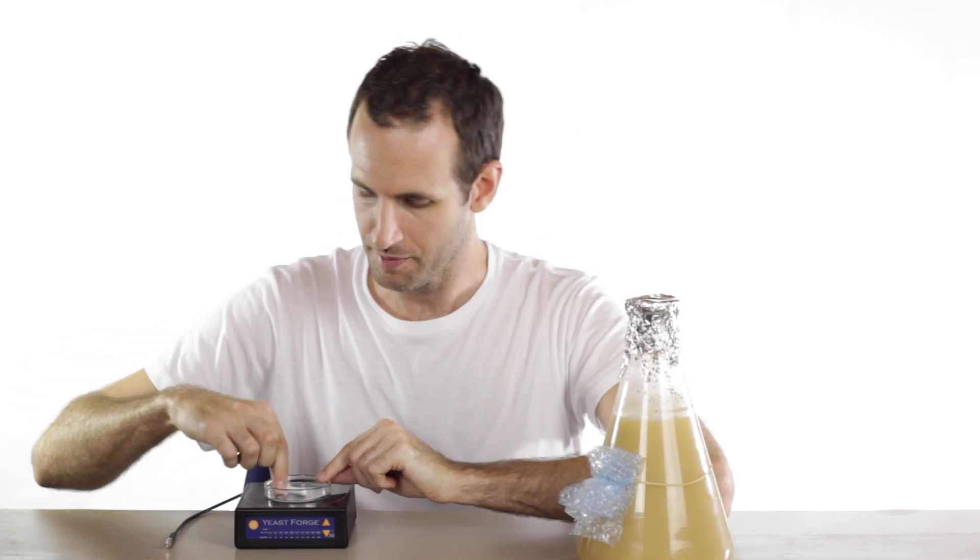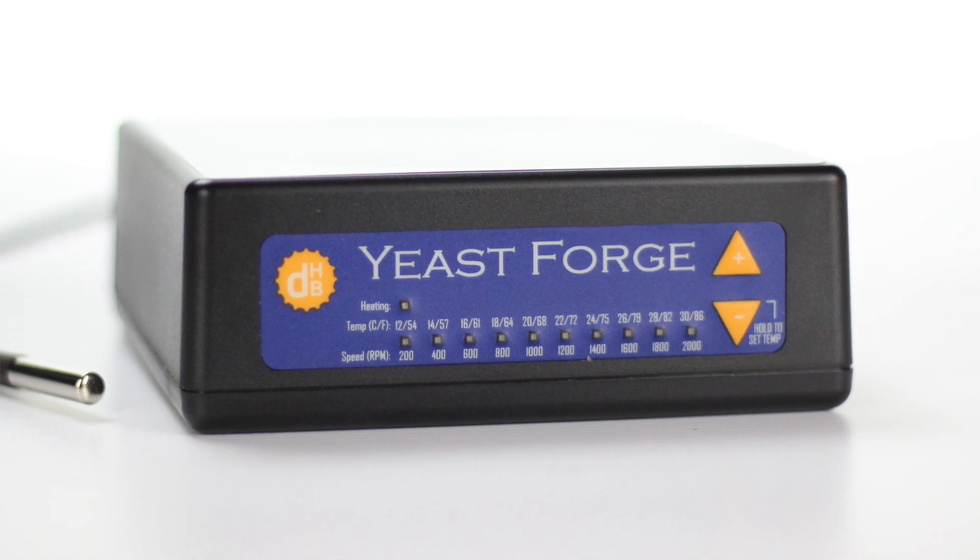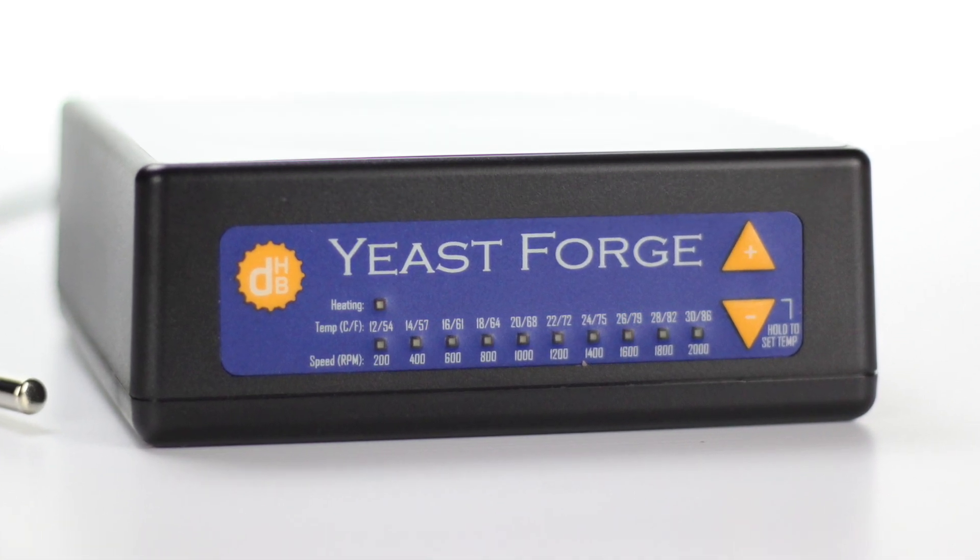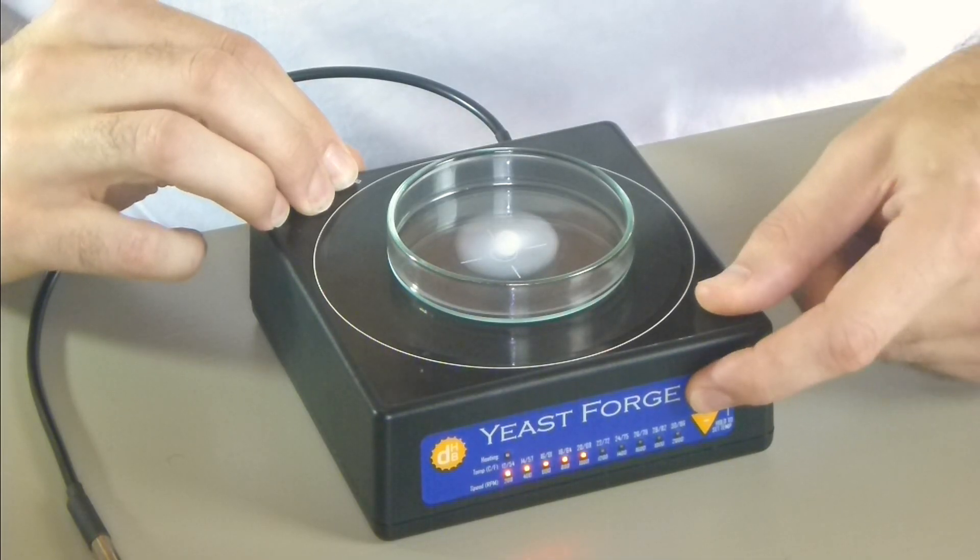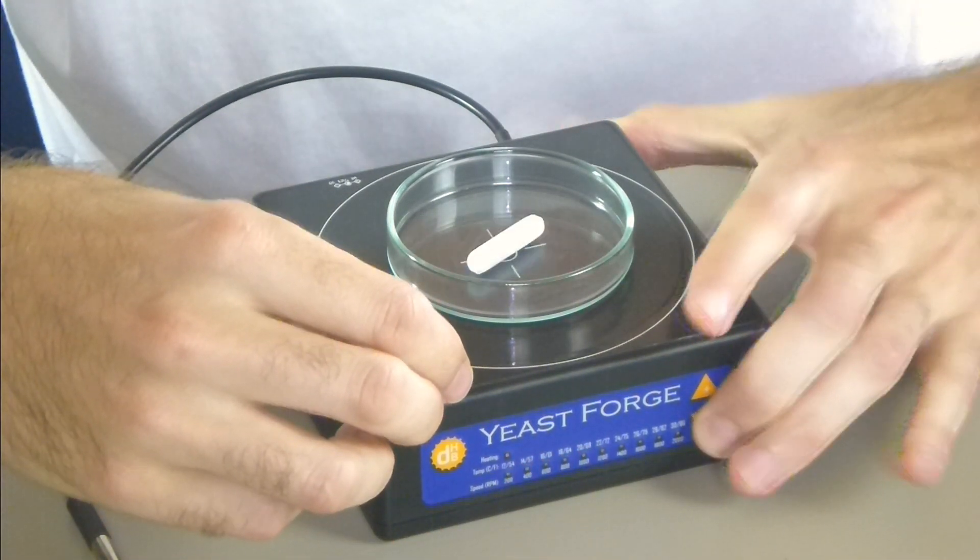Here I've got a magnet stir bar and it's just sitting in a petri dish so you can see it. And to set the speed of that spinning, it's just a simple up and down interface on the front of the stir plate and that can go anywhere from 200 RPM to 2000 RPM.